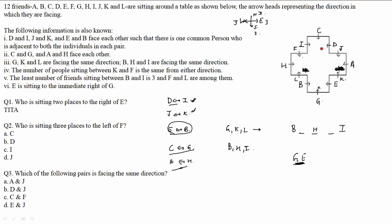Let's verify all conditions: D and I — satisfied. J and K — satisfied. E and B — satisfied. C and G, A and H — satisfied. G, K, L same direction — satisfied. B, H, I same direction — satisfied. K and F equal persons from either direction: 5 persons each way — satisfied. Least friends between B and I is 3 — satisfied, with F and L among them. E is to the immediate right of G — satisfied. All conditions check out.